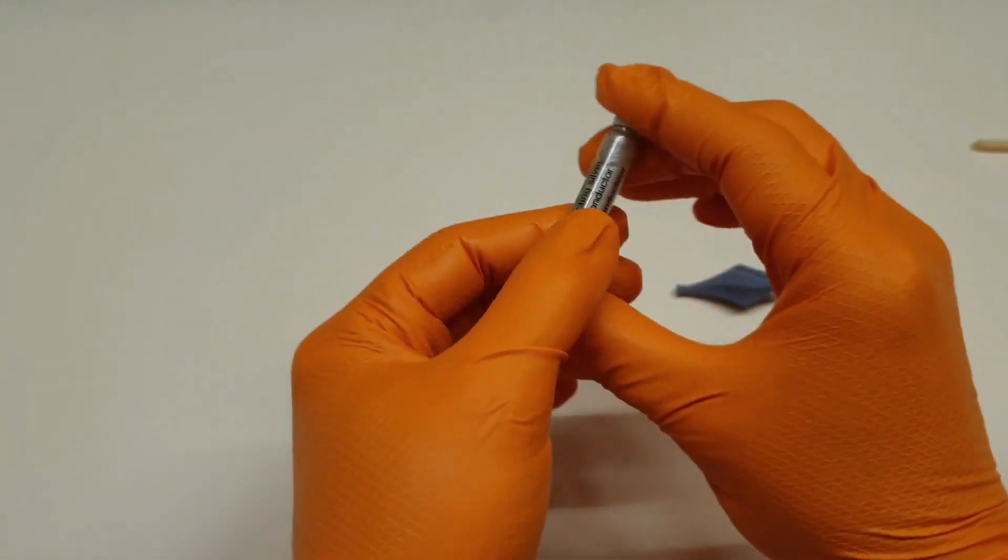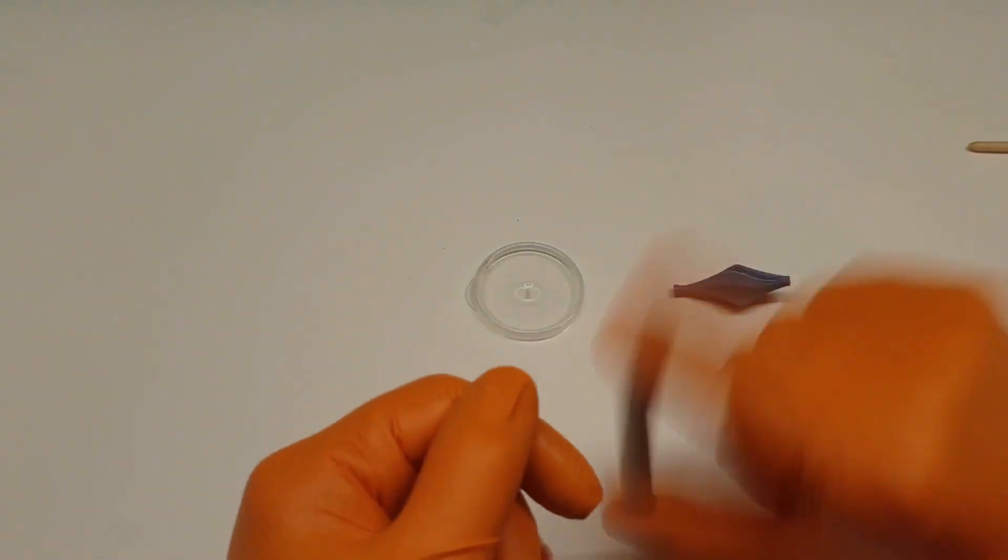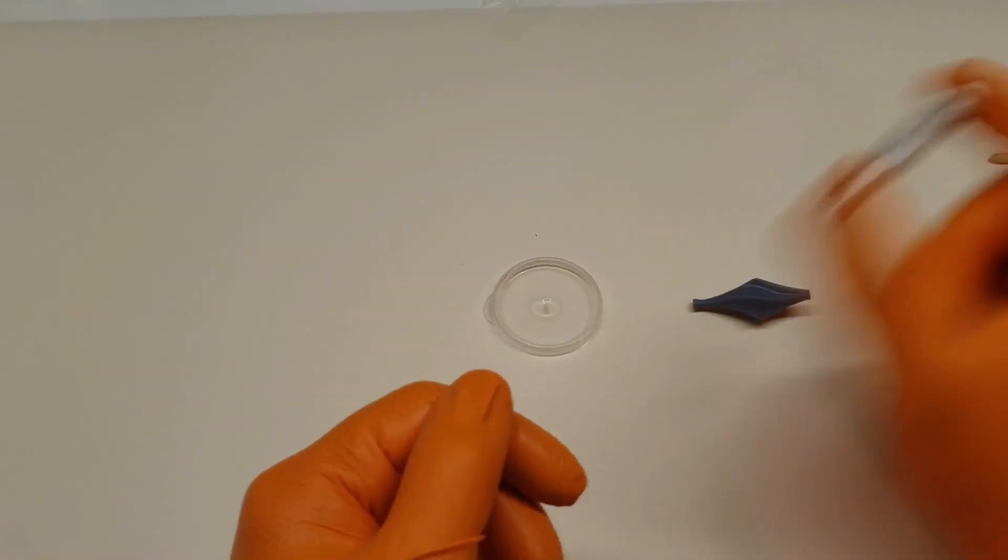The first method is just using conductive paint, and the second method involves making a paste out of graphite powder and alcohol.